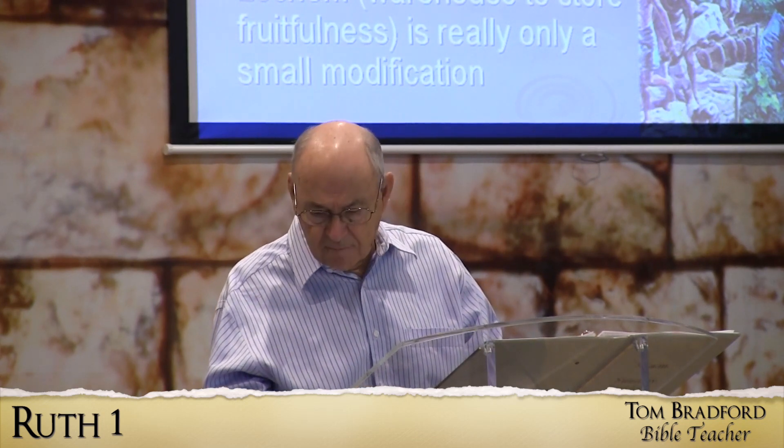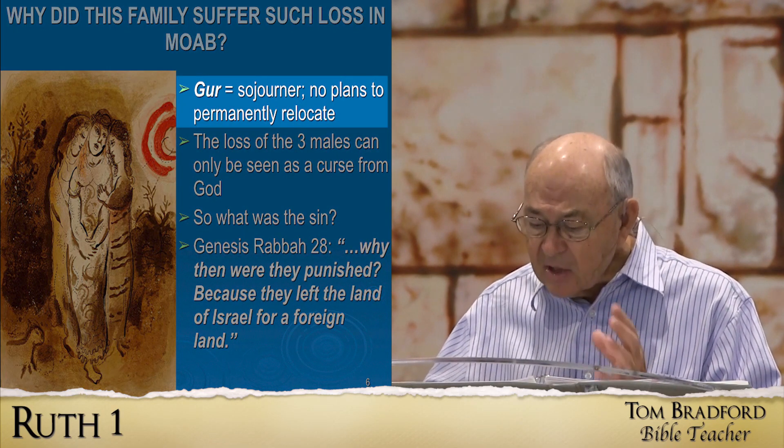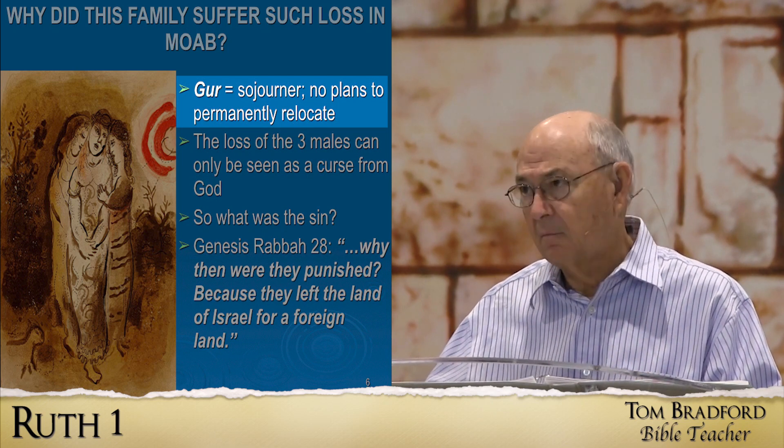Back in verse 1 we are told that this certain man, Elimelech, took his family to sojourn in Moab — meaning to go someplace for a while, but not with the intent of making it your new home. The narrative makes it clear that the family was not permanently moving to Moab. Rather, they just wanted to stay there as long as was necessary, then return back home to Bethlehem. They were not changing their nationality. They were not giving up their allegiance to the tribes of Israel — they were just long-term visitors until the situation at home got better.